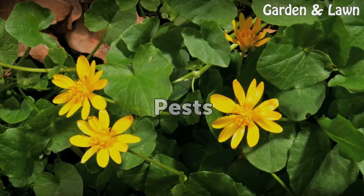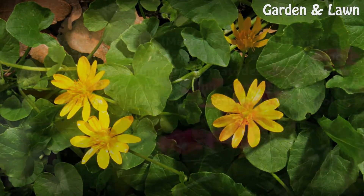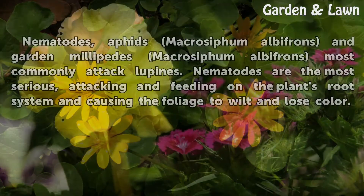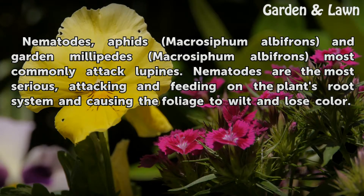Pests. Nematodes, aphids, and garden millipedes most commonly attack lupins. Nematodes are the most serious, attacking and feeding on the plant's root system and causing the foliage to wilt and lose color.